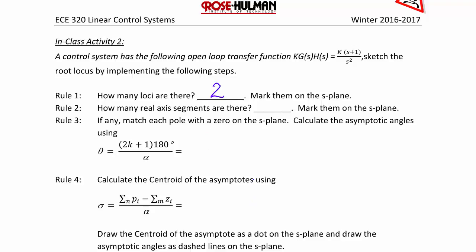How many real axis segments are there? Since we have two poles and one zero, we will see that the two poles are going to be at the origin, and the zero is going to be at negative one. So the real axis segments, there's going to be one, and we're going to mark those on the s-plane. So let's go mark this information.